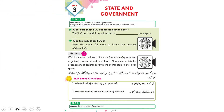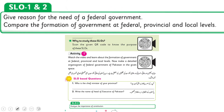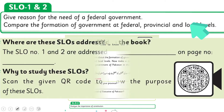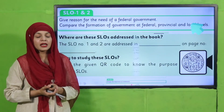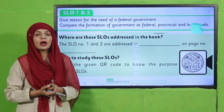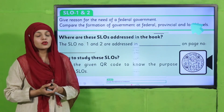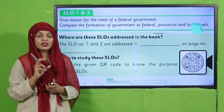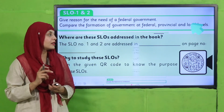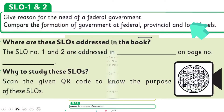My dear students, now next what you will do is: in dono SLOs ko dobara padhane ke baad aapne in ko dhunna hai ki aapki Social 5 ki book pe kaunse page number pe diya gaya hai. Write down the page number and the book name in the given blanks.